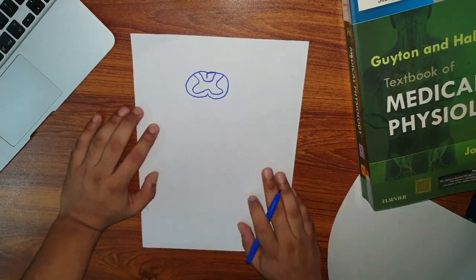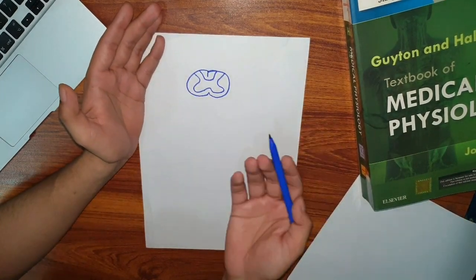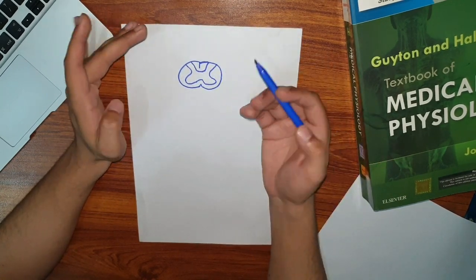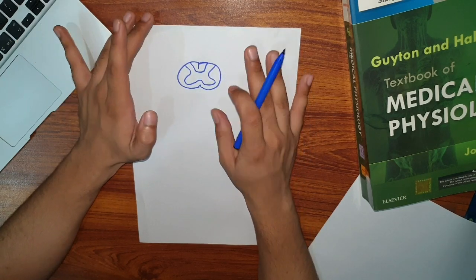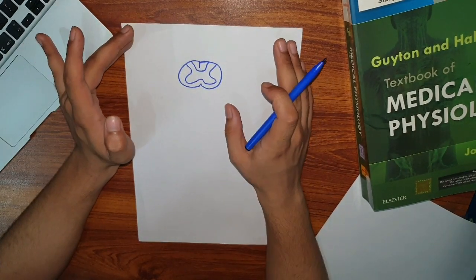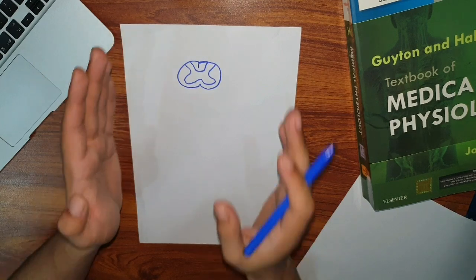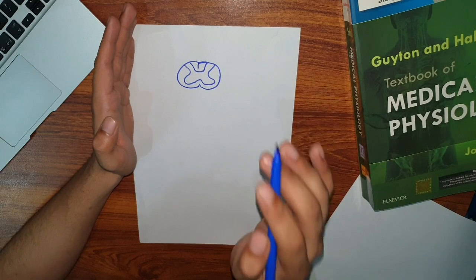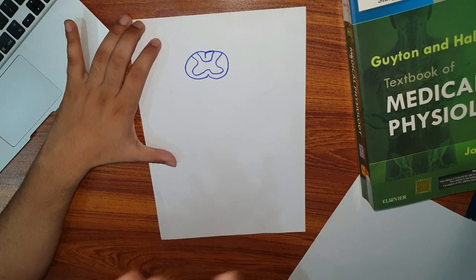Let's start with a very basic spinal cord segment. A spinal cord segment is a cross-section of the spinal cord. We should know that this is not from the thoracic level — rather in the cervical or lumbar region only two horns are present, with no intermediate horn. If there was an intermediate horn, we would know that this is a thoracic level vertebra where we took the spinal cord section.